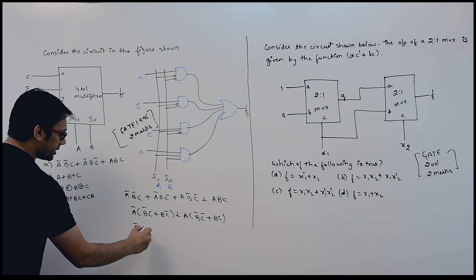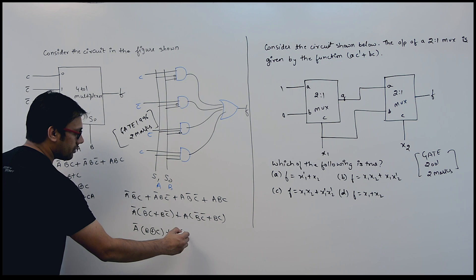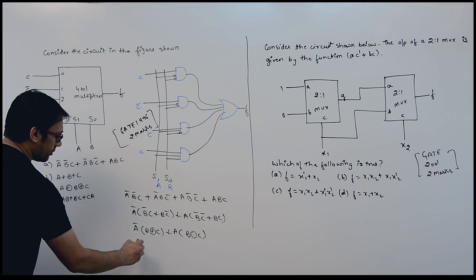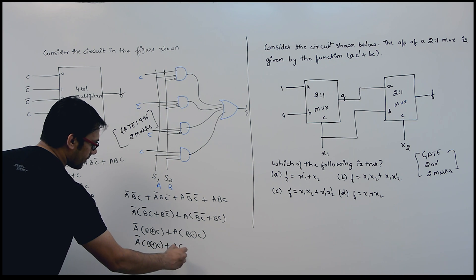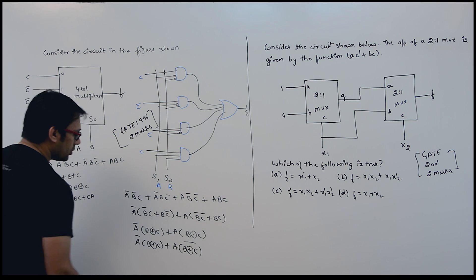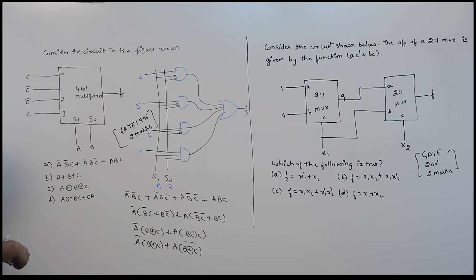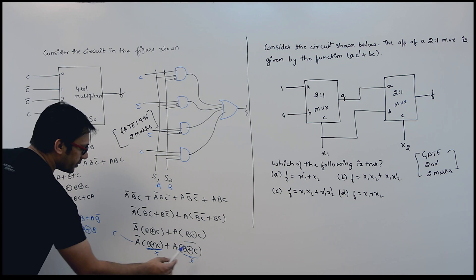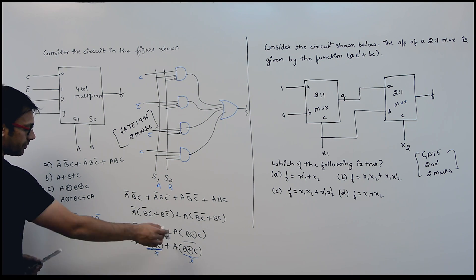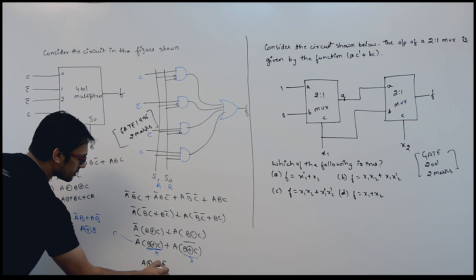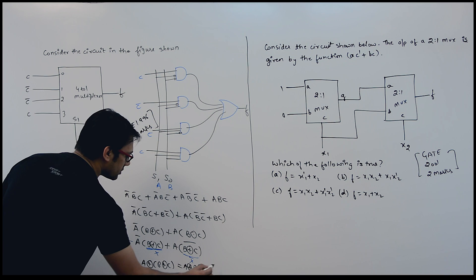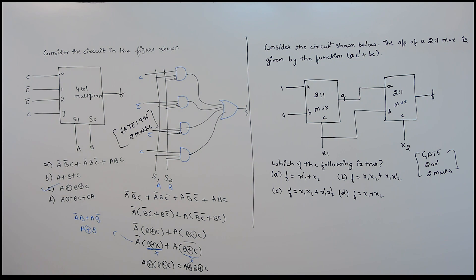This can be further represented as A complement (B XOR C) plus A (B XOR C) complement. And this expression — A complement X plus A X complement — is exactly A XOR X, which is A XOR (B XOR C). Since XOR is associative, this can also be written as A XOR B XOR C. Therefore, the answer to this question is option C: A XOR B XOR C.